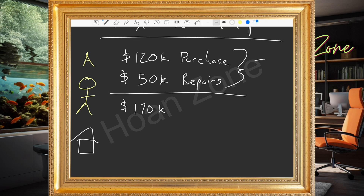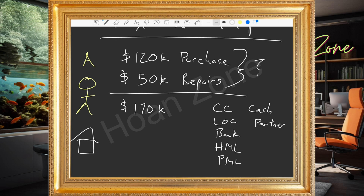The question is, where does this money come from? You can use credit cards, lines of credit, the bank, a hard money loan, private money loans, cash, a partner, a self-directed IRA, seller financing, or even take over a property subject to. The way you finance it is almost endless.